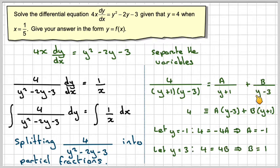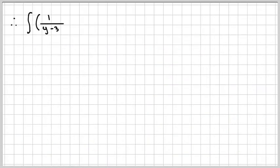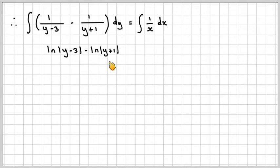I'm going to rewrite the integral with that one first minus this one second. The integral of -1 over y - 3 minus 1 over y + 1 dy equals the integral of 1 over x dx. These integrals are fairly simple. It's ln(y - 3) - ln(y + 1) = ln(x) + c.